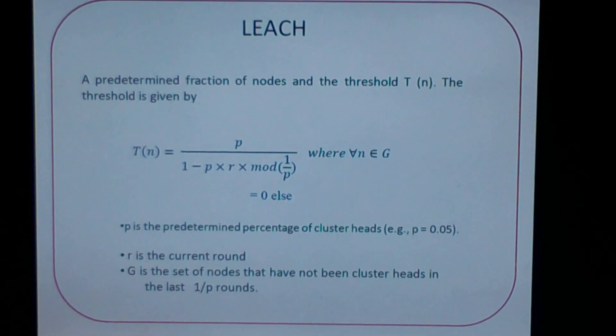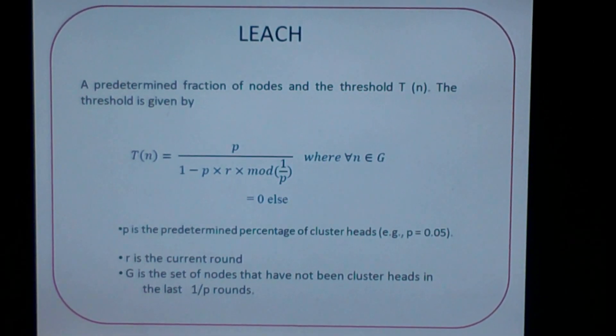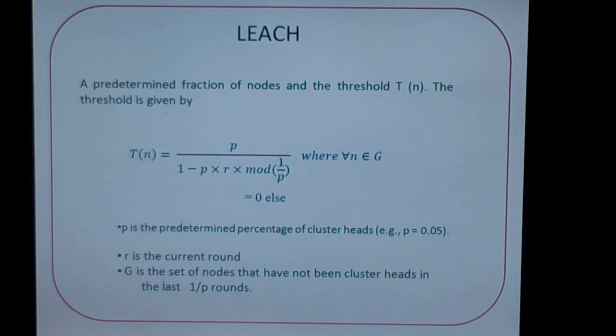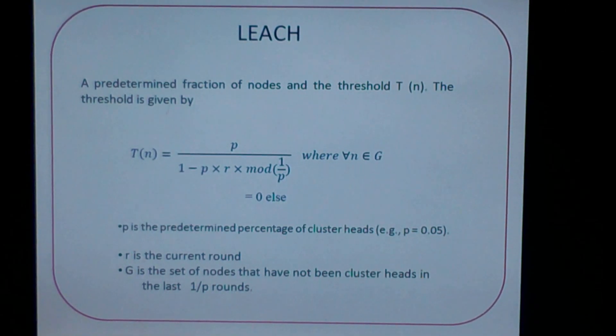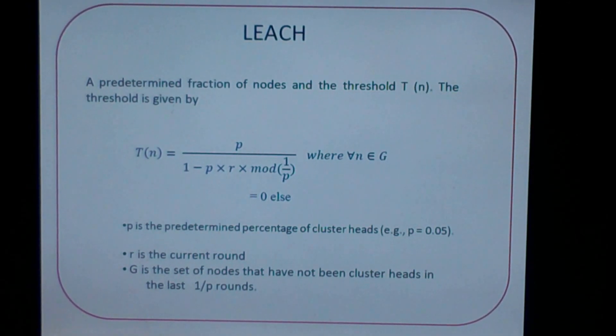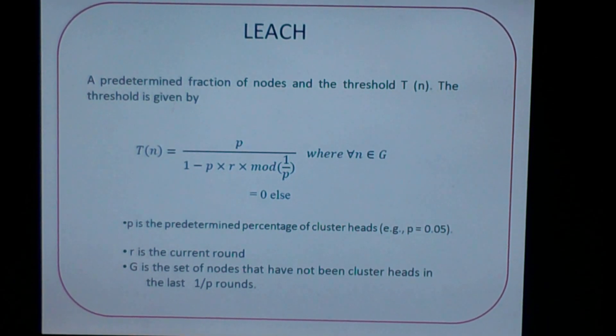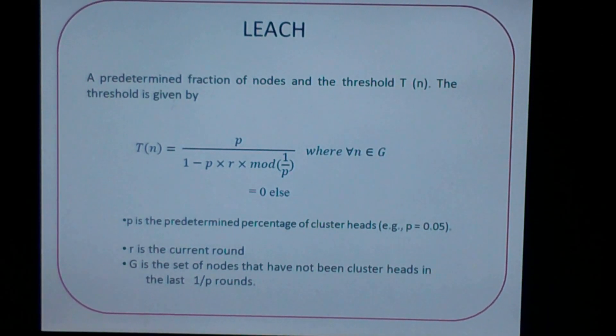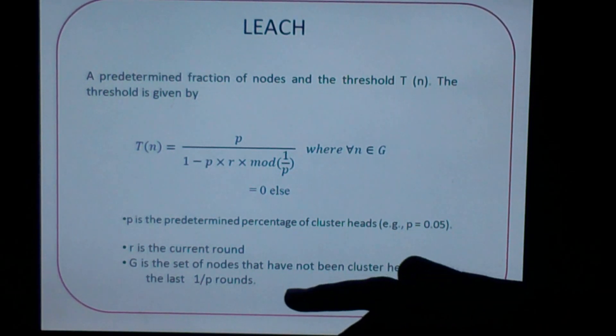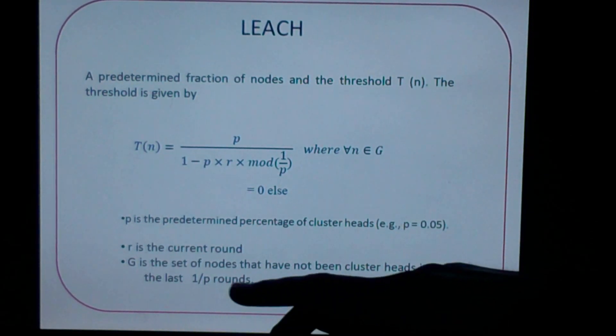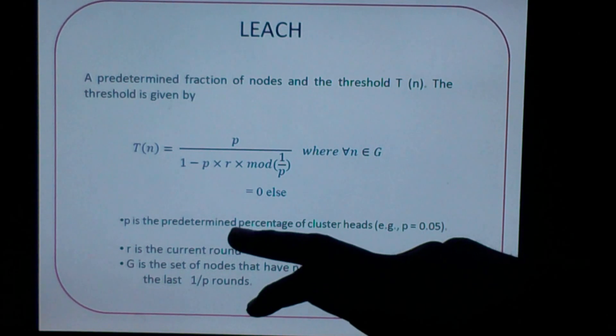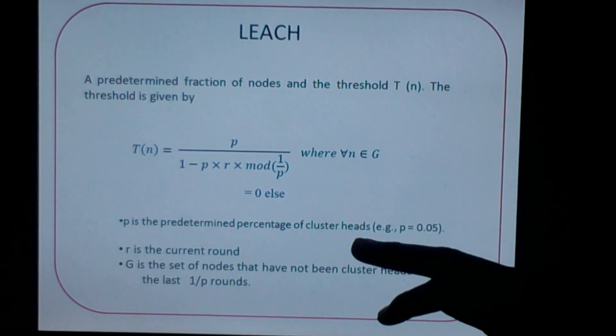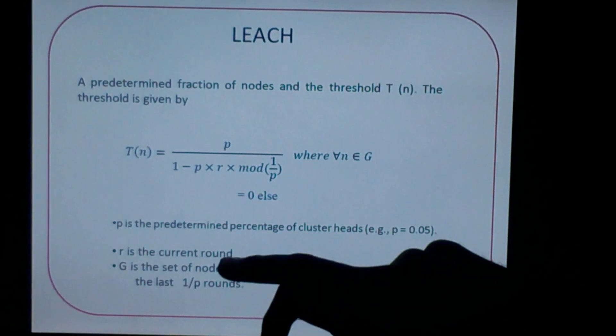To reach up to my goal, I require the hierarchical protocol like LEACH. LEACH is a predetermined fraction of nodes and threshold function T(n). The T(n) is given by T(n) equals P upon 1 minus P into R into mod N, where all the nodes belong to G, where G is a set of nodes that have not been the cluster head in 1 upon P rounds. And P is predetermined percent of cluster head, means probability, and R is the current round.